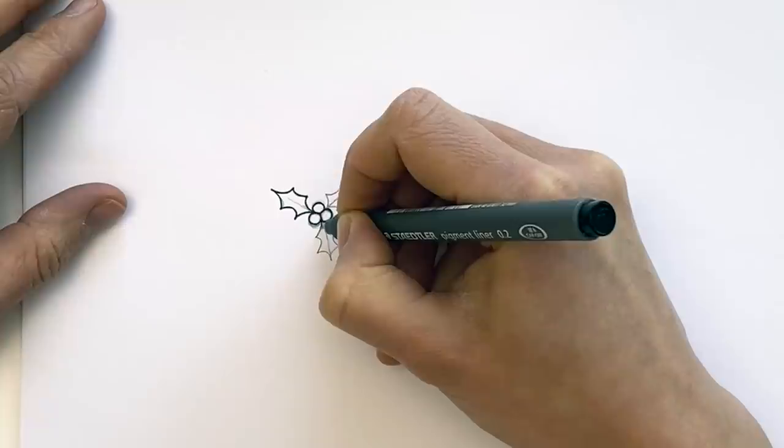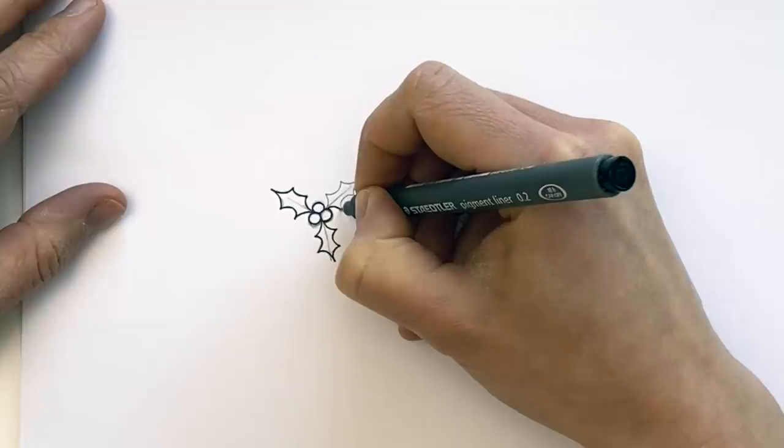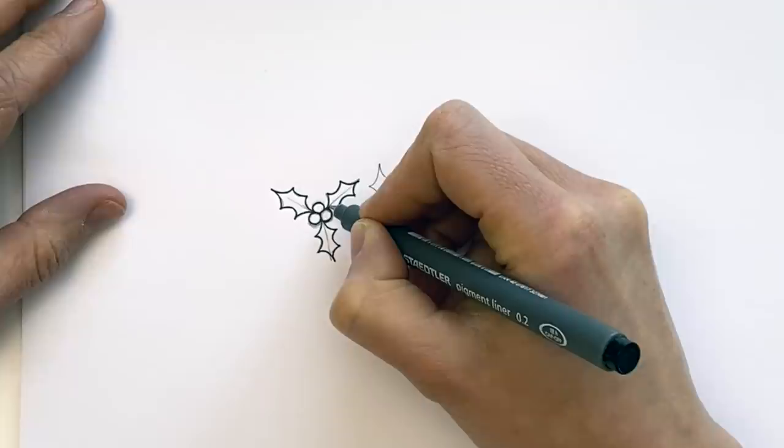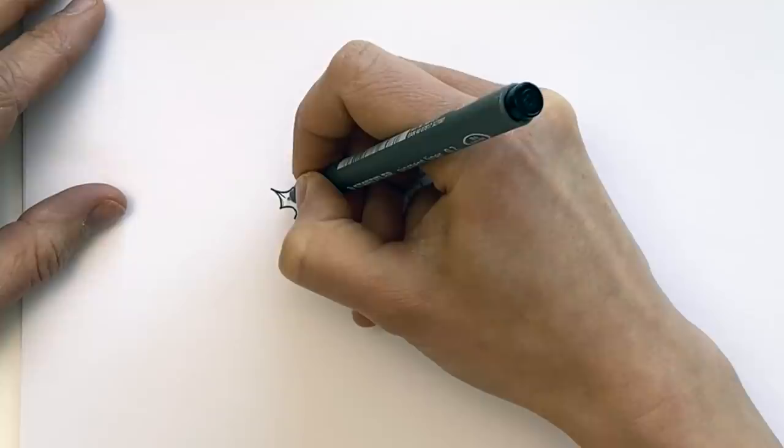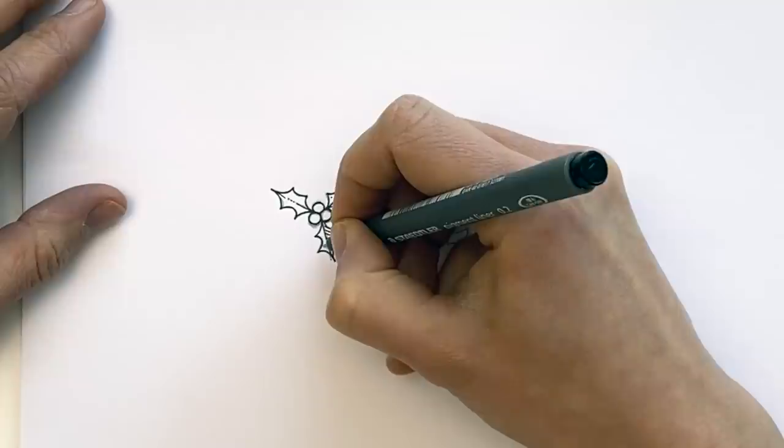So I literally go over the top of the pencil lines. Sometimes I'll tidy them up a little bit, add some extra details. I'll show you that in a second. So for example, this leaf here, I'm going to ink in that center spine and then do a little bit of detailing. This one will maybe do a line and some dots. Let's do a few dots in here.